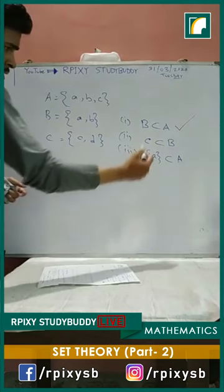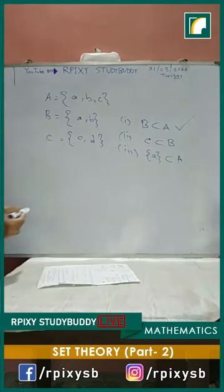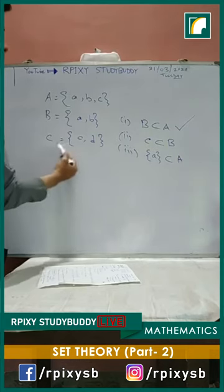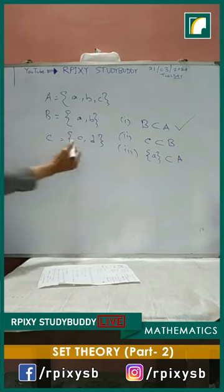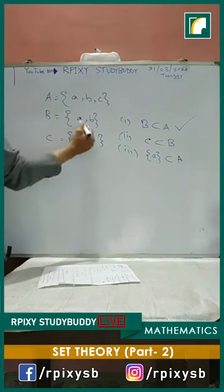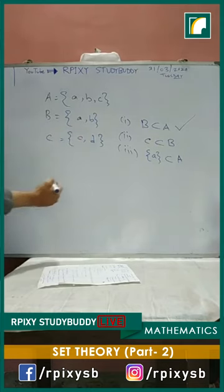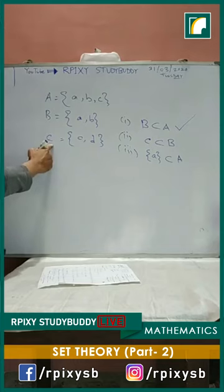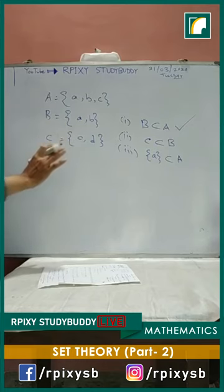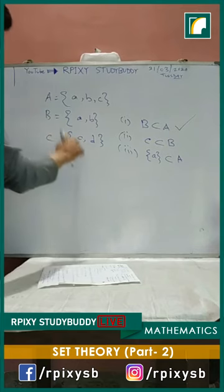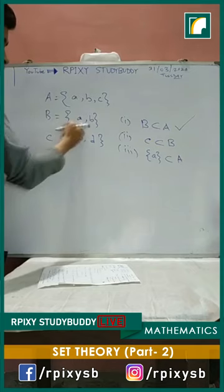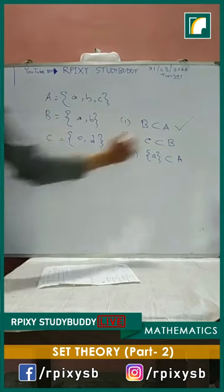Now see the second one — this says C is a proper subset of B. Check: the elements of C are C and D, whereas the elements of B are A and B. There is an element C inside the set C but there is no element C inside B. So you cannot say C is a proper subset of B — C is not even a subset of B. First of all, C should be a subset of B, meaning every element of C must be an element of B. But the element C is not inside set B, so this one is incorrect.